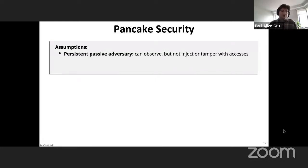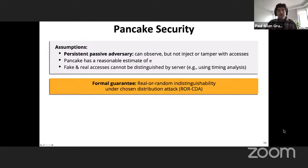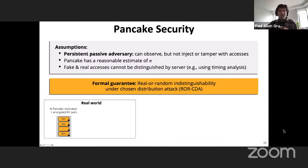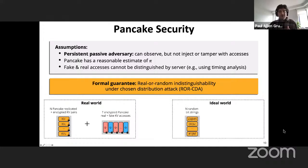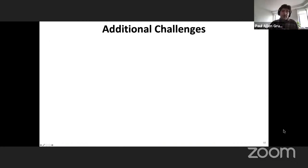We analyzed security under three assumptions: the persistent passive adversary, that the Pancake proxy has a reasonable estimate of the true query distribution π, and that the server cannot distinguish real and fake accesses via timing analysis. We formulate a security goal called Real-or-Random Indistinguishability under Chosen Distribution Attack (ROR-CDA): Pancake guarantees that the real world — where the adversary receives replicated encrypted key-value pairs and a transcript of t encrypted accesses generated by the real proxy — is indistinguishable from an ideal world where the adversary receives random bit strings and t uniformly random accesses.